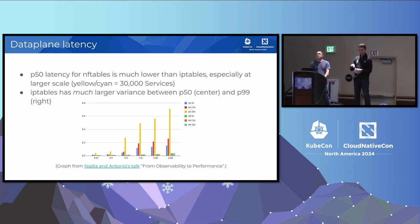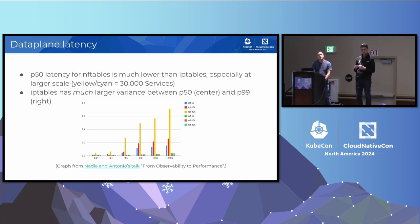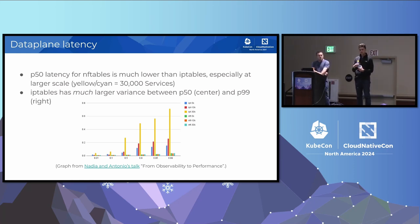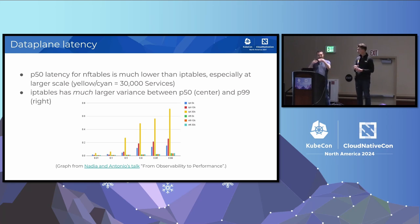Question: Doesn't IPVS have more than one mode — is the performance metric for a specific mode? Answer: The graph likely shows whatever the default KubeProxy IPVS configuration is, probably round-robin. But the choice of mode in IPVS ends up not mattering a whole lot because each node only sees a small percentage of the traffic and can't really take advantage of being clever about load balancing.